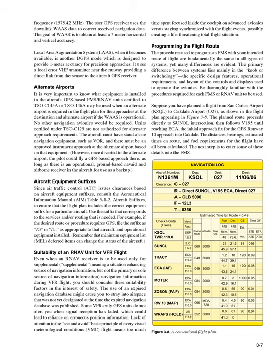The goal of WAAS is to obtain at least 7-meter horizontal and vertical accuracy. Local Area Augmentation System (LAAS), when it becomes available, is another DGPS mode which is designed to provide 1-meter accuracy for precision approaches. It uses a local error VHF transmitter near the runway providing a direct link from the sensor to the aircraft GPS receiver.